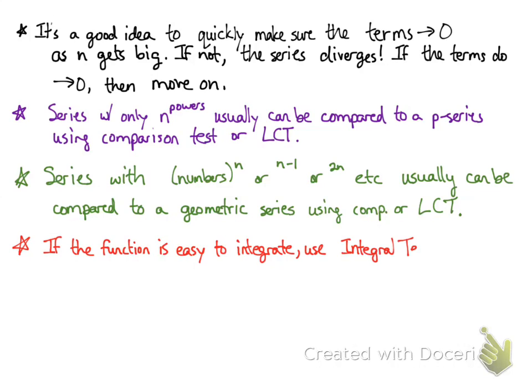Sometimes the terms in your series look like a function that would be easy to integrate. If that's the case, just jump right to the integral test. Often this is a u-substitution integral, but sometimes it's even simpler than that. If the function is easy to integrate, use the integral test. Turn it into an improper integral, and if that improper integral can be computed and gives you a finite answer, then the series converges. If the improper integral diverges, then the series diverges.